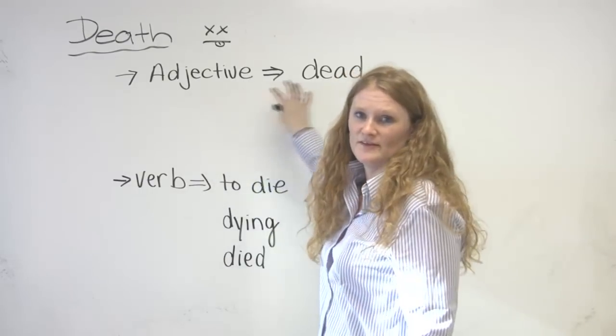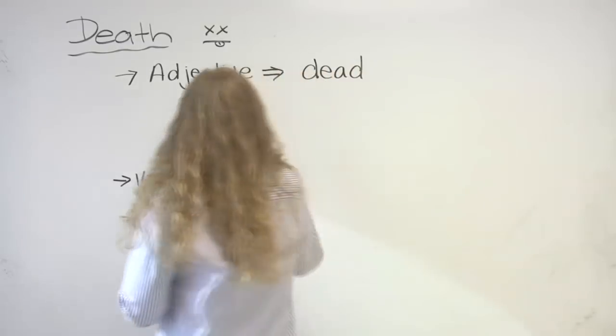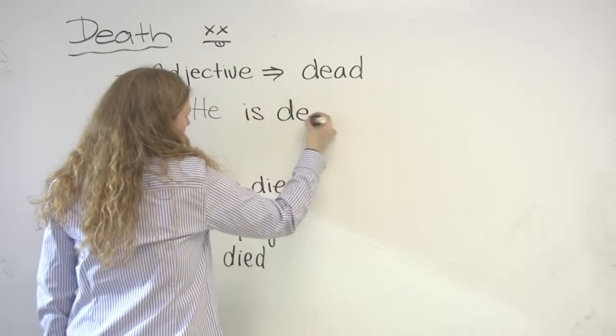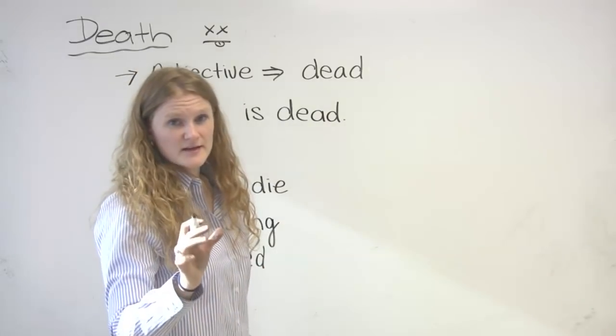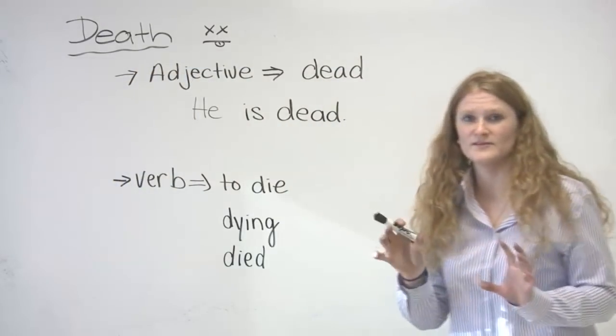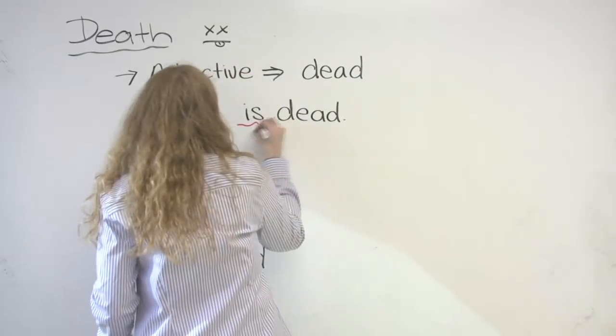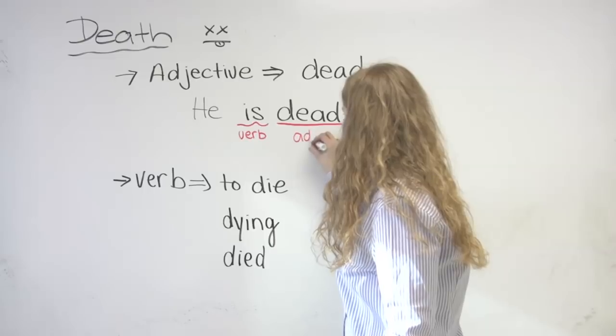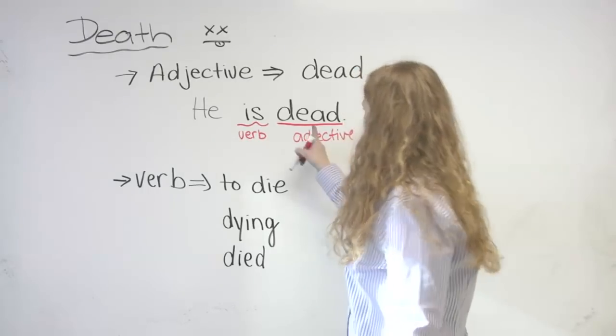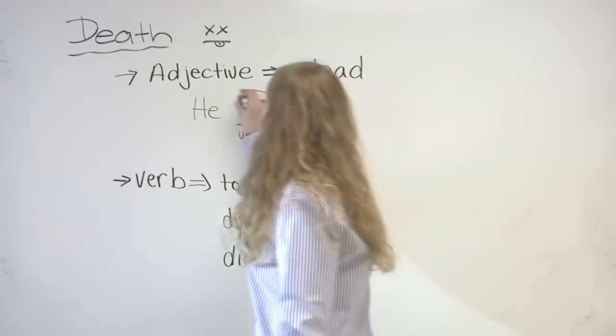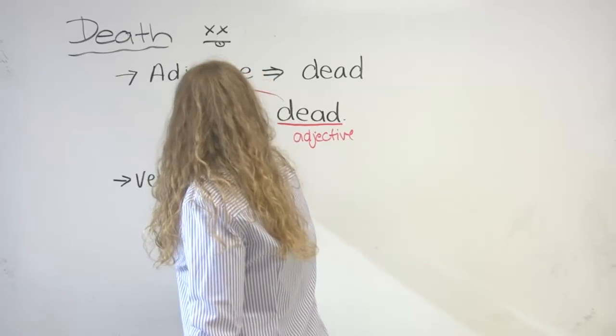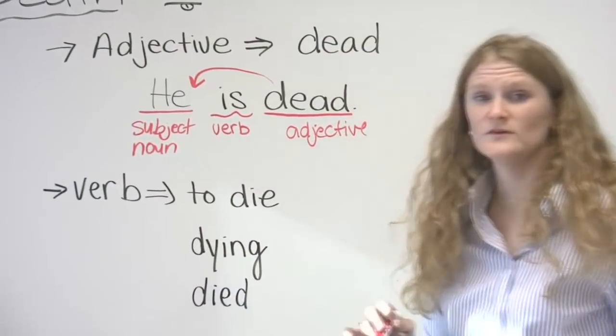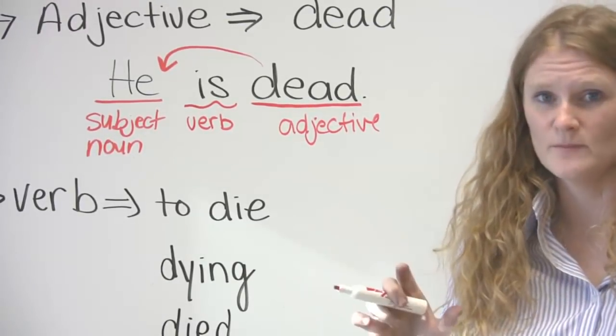The adjective is dead. So I can say, he is dead. In this sentence, where's the verb? It is a to be verb. The verb is 'is'. The adjective is dead. An adjective describes the subject or the noun. So you can always remember that an adjective describes a noun.